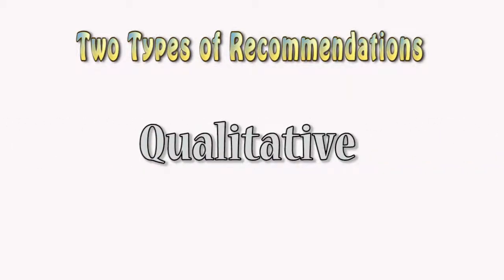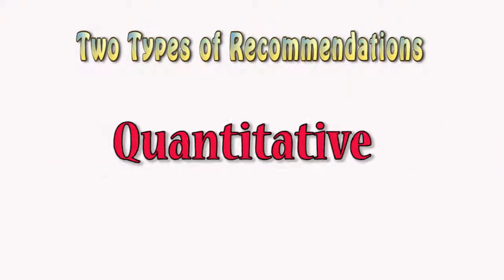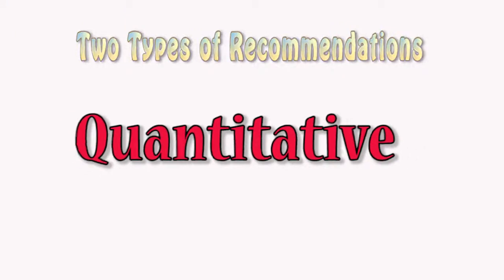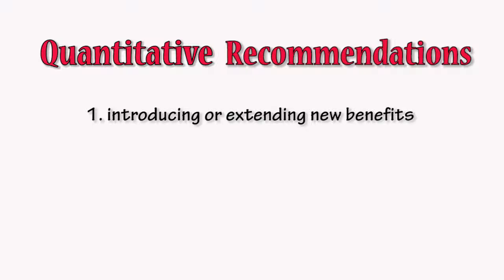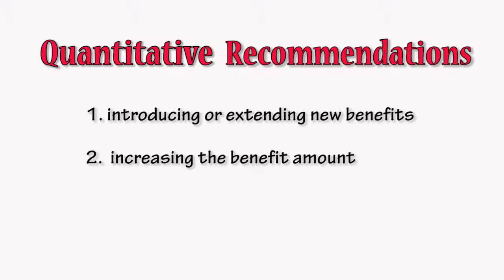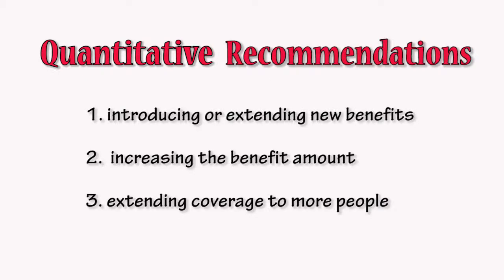There are two types of recommendations made in the assessment matrix: quantitative and qualitative. In this demonstration we focus only on quantitative. Examples of such recommendations are introducing or extending new non-contributory benefits, increasing the benefit amount for non-contributory schemes, and extending coverage to more people.